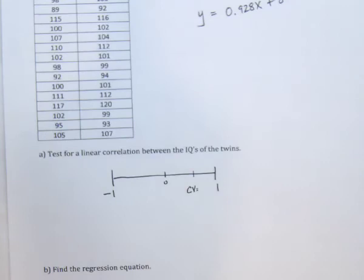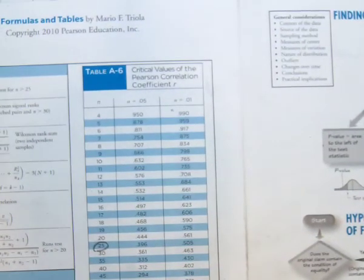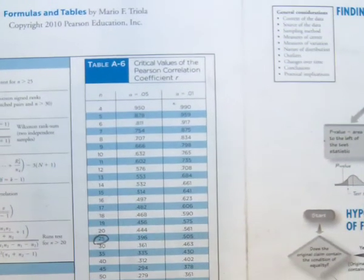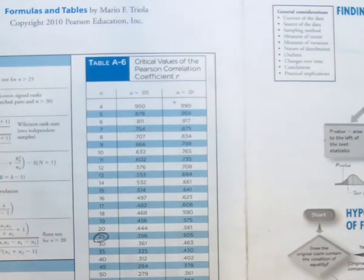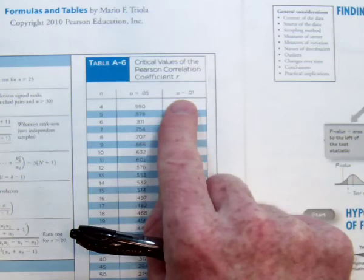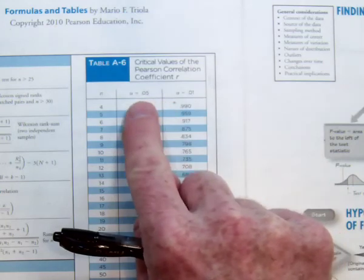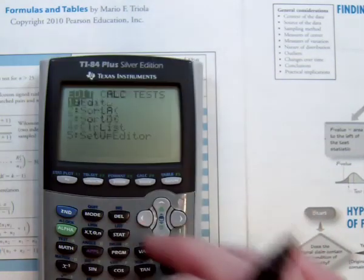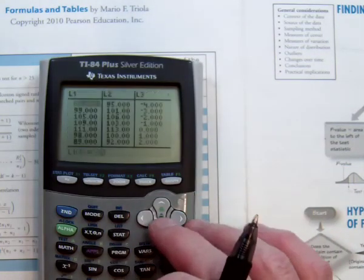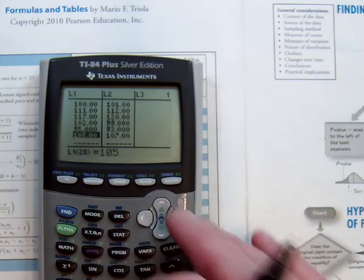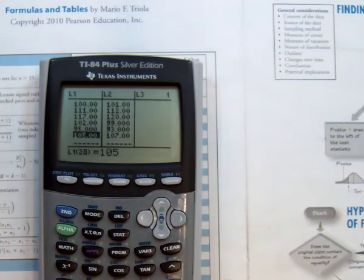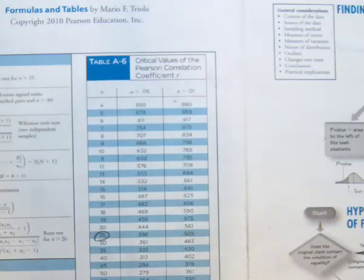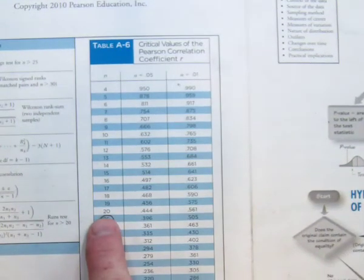Then the next thing we need to do is look up the critical values. The critical value is found on this very smallest table, a6. So the critical value for r. You only have two choices, 0.05 and 0.01. We're going to be using 95% level of confidence. And then you just need to know the sample size. Well, I could count them, but I could also just go right here and go to the last number. There's 20 of them. So n equals 20.